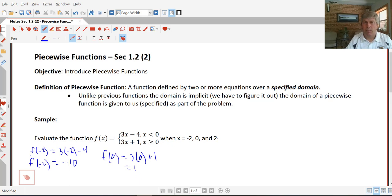And then for 2, for an input of 2, since 2 is greater than or equal to 0, again we have to use the bottom function. So f of 2 is 3 times 2 plus 1, and we get an output of 7.